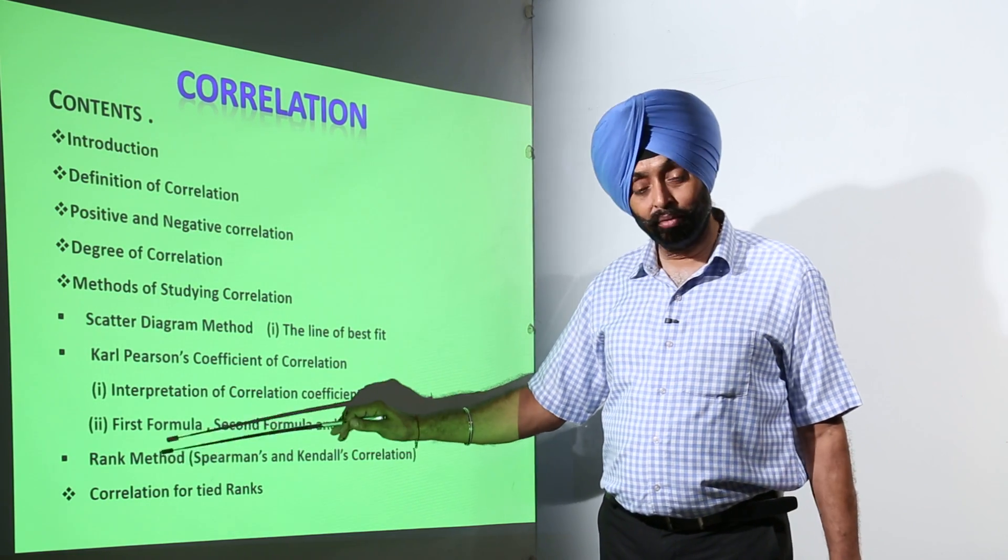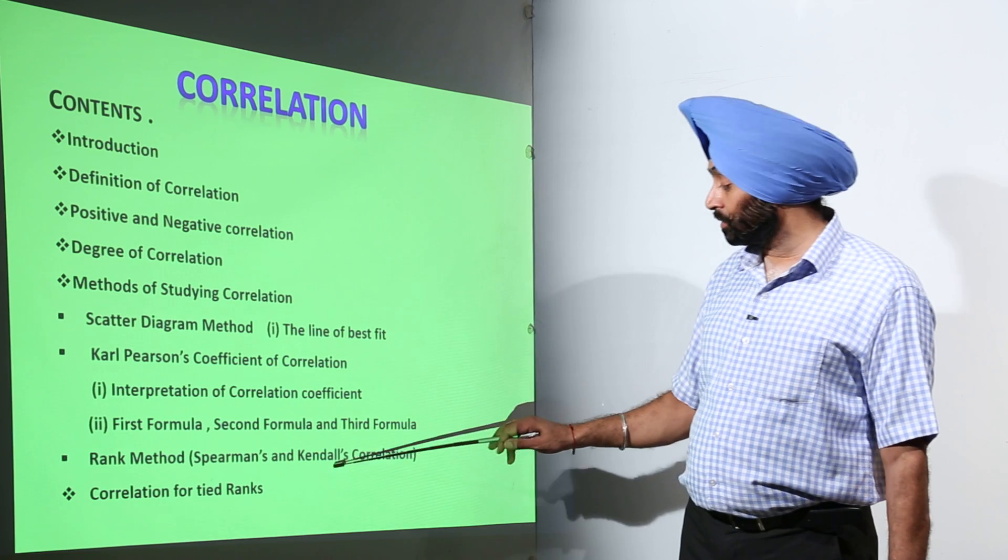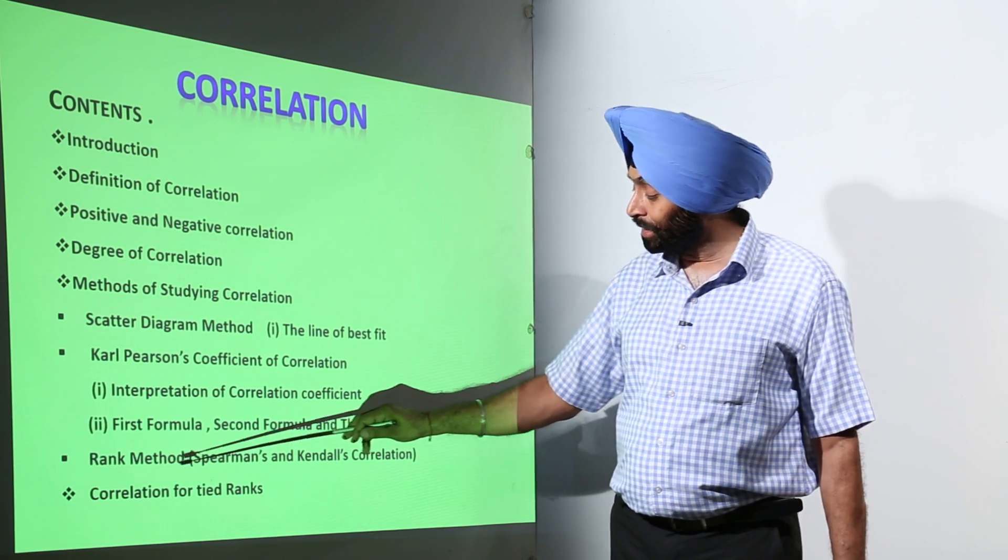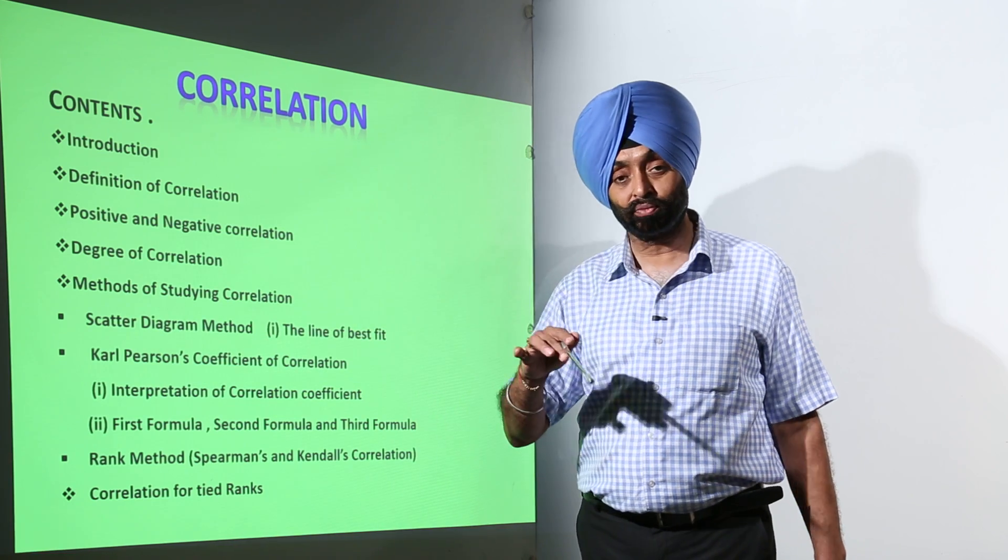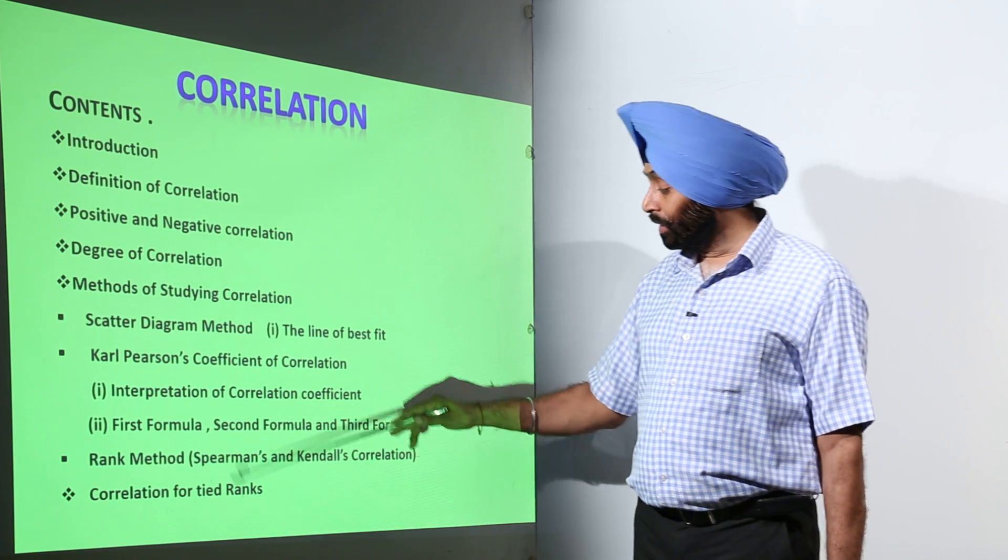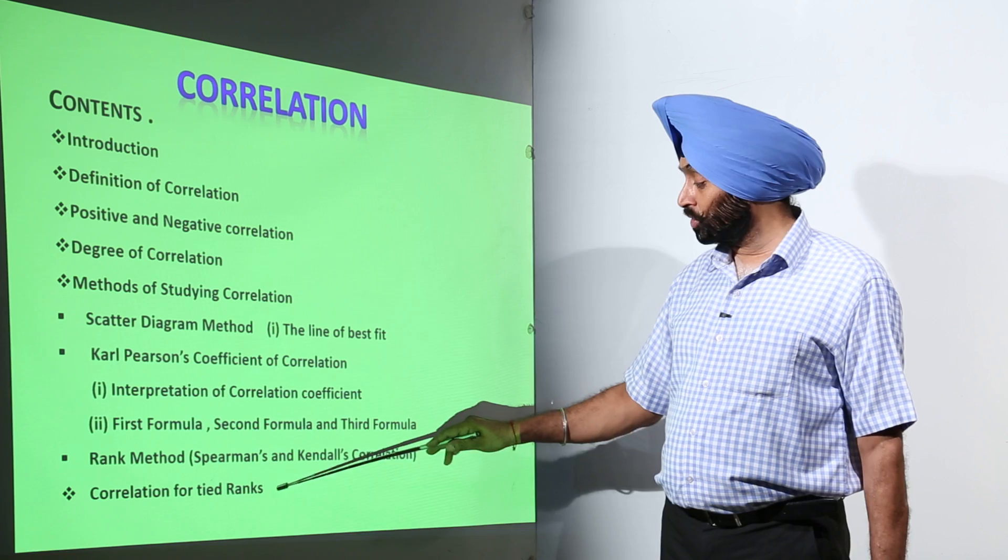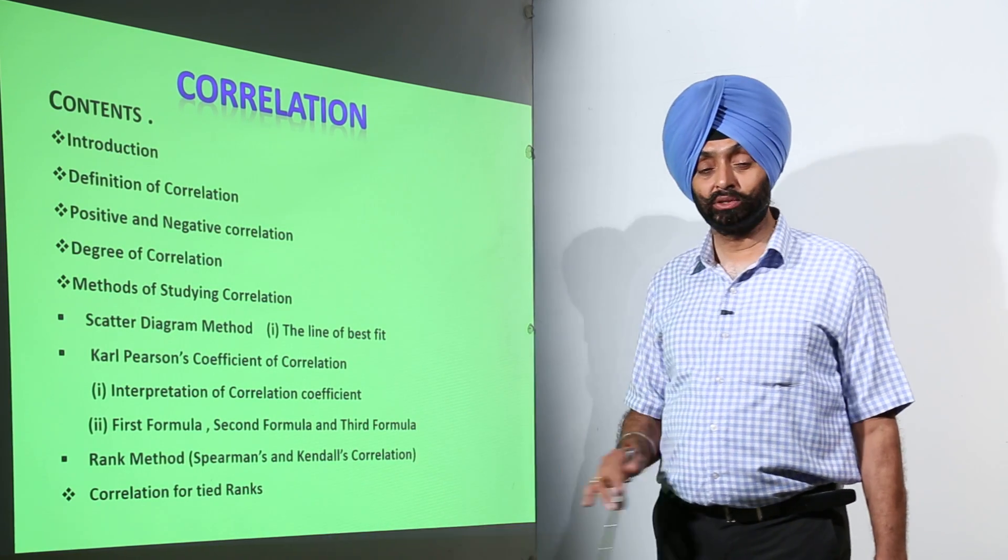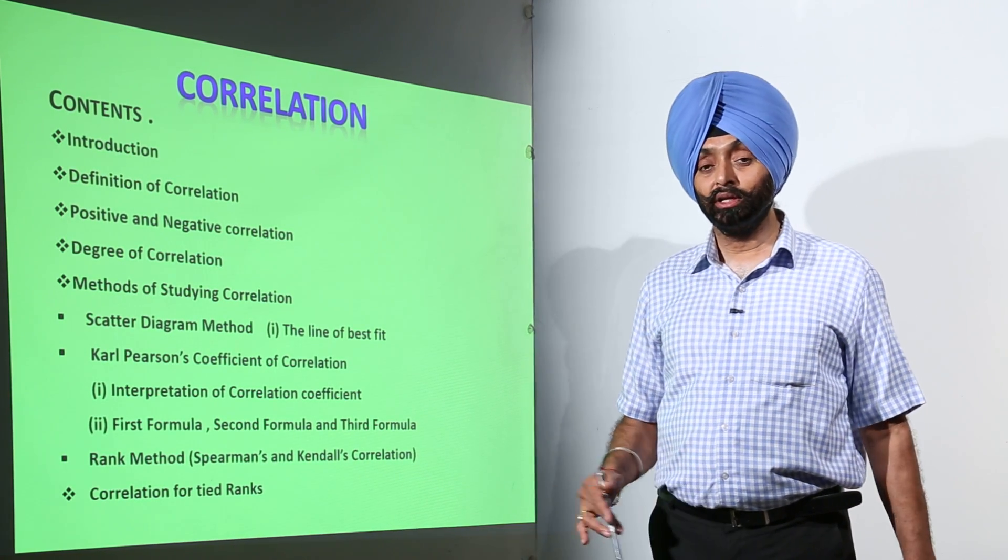Then one more mathematician Spearman's and Kendall's. Spearman's we are going to use to find the coefficient of correlation by the rank method. And at the last, correlation for the tied ranks. So, these are all the topics which we are going to cover in our chapter.